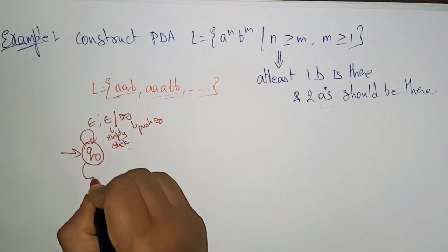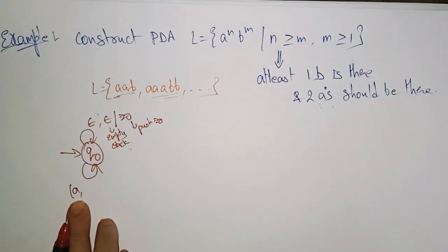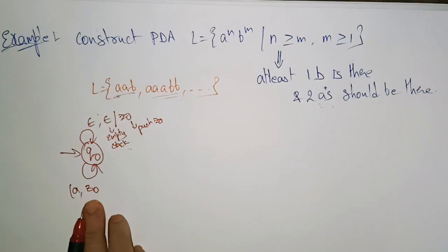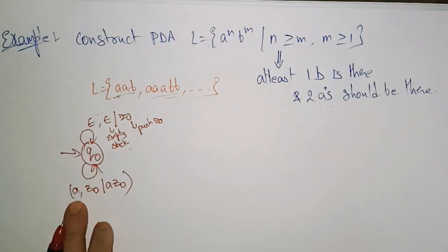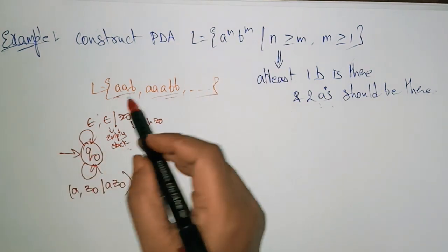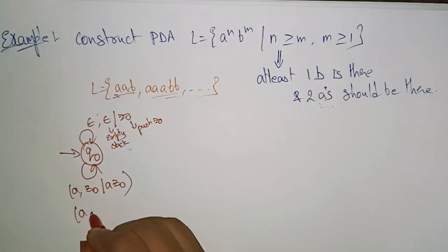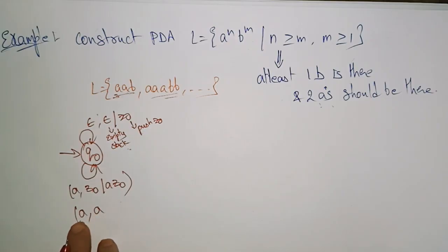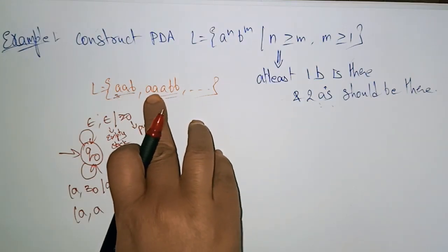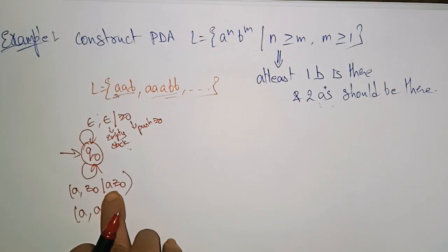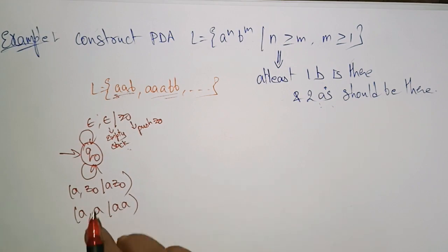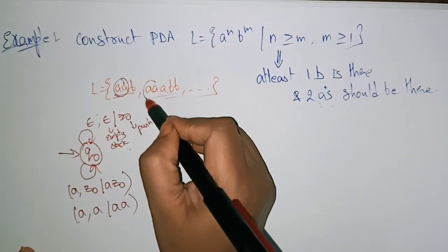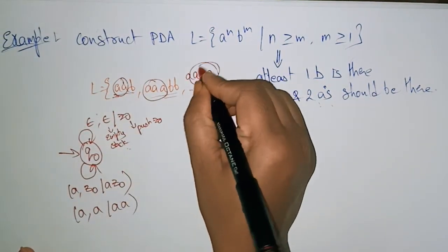First, read the first element: 'a' has to be read. 'a' is the input element, and the top of the stack contains Z0. So input is 'a', top is Z0, and I push 'a' onto the top of the stack. This is repeated for any number of a's — the stack accumulates a's: a, a, a, a — as many a's as are present in the input.